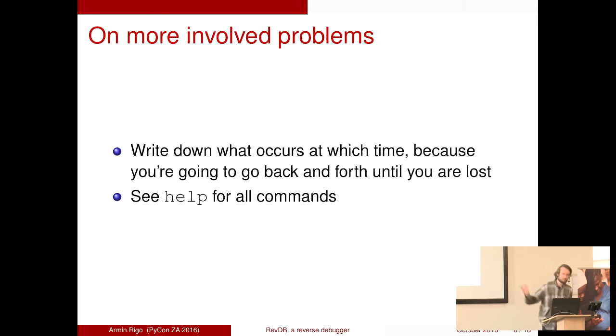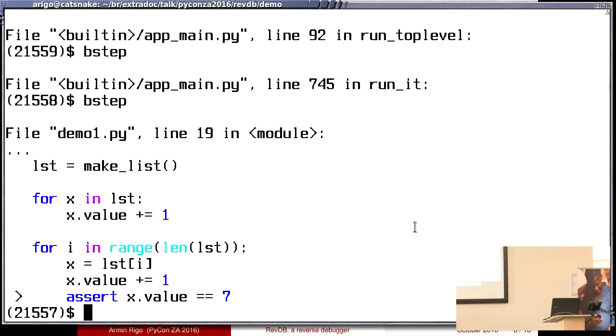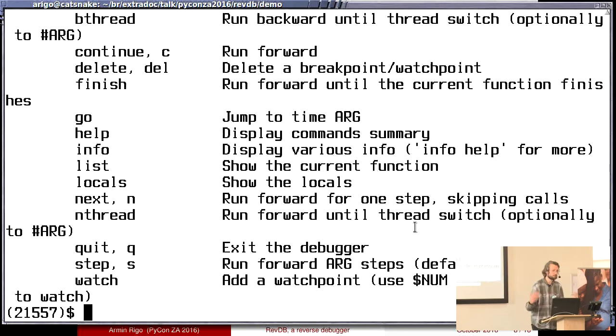Here I have already shown how it works on a small example. Now on larger examples, well, if you do that on a large example, you are going to be lost at some point. Definitely because going back and forward in time, figuring out the value of variables. So I would recommend to write down this number, the time. So it's the time at which you are currently. So I would recommend to write in some separate piece of paper what occurs at which time. And to order what you write by time in order to figure out what's going on in your program.